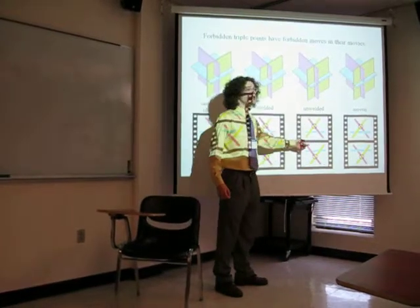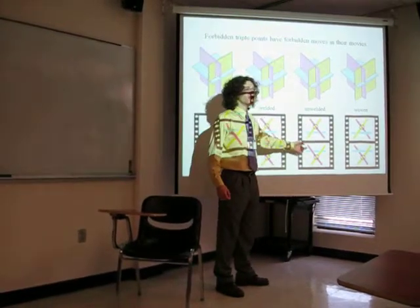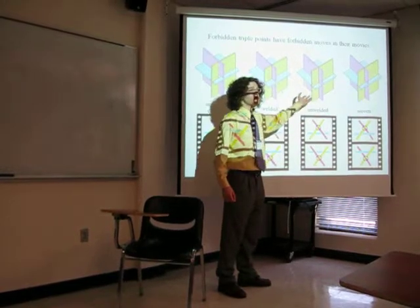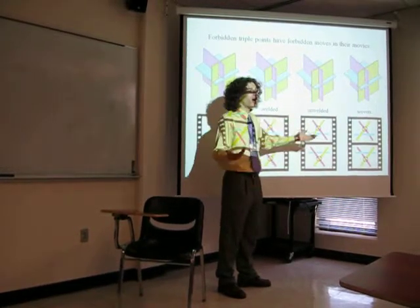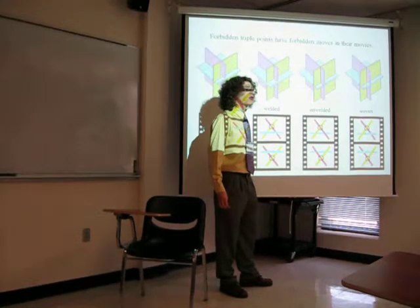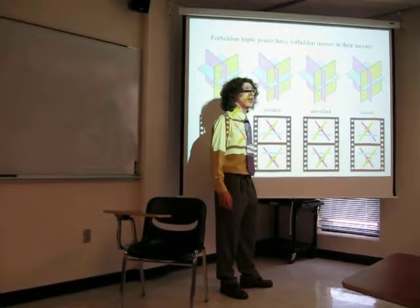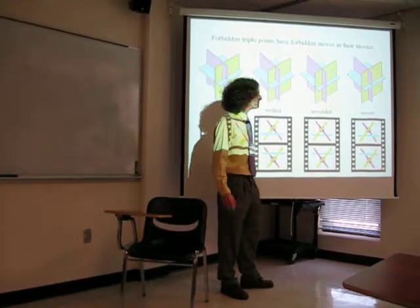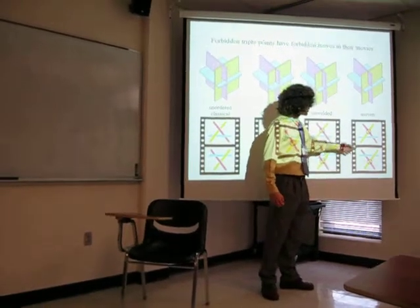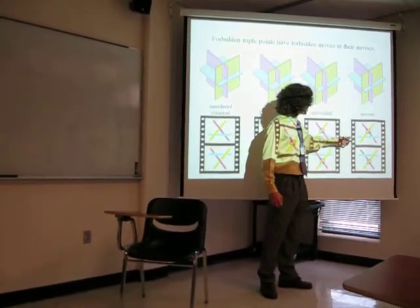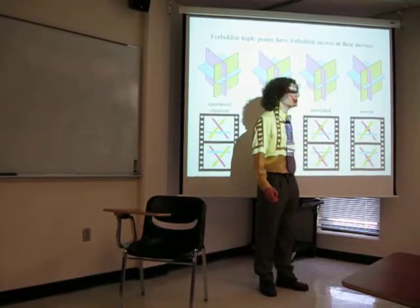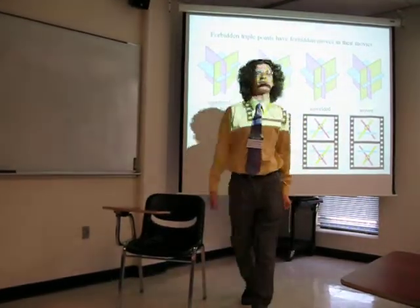Likewise, Rourke calls this move the unwelded move, and if we started allowing both of these, we would have an unwelded two-knot diagram — probably a pretty trivial category when I get around to actually analyzing it. That's my prediction. And then there's this other move that I never actually hear anybody talk about, where it's like a mixed move, but it kind of weaves through.